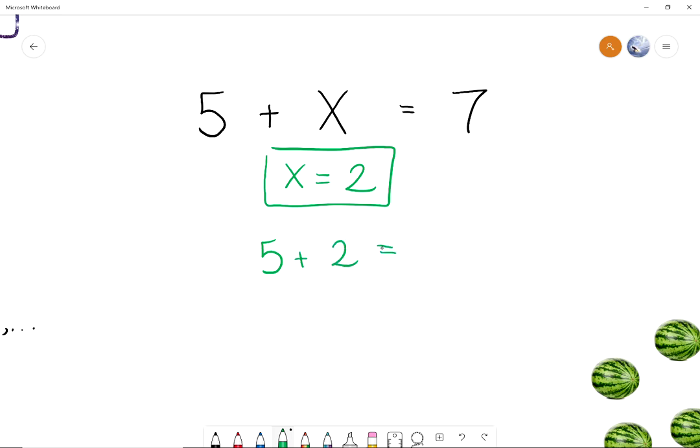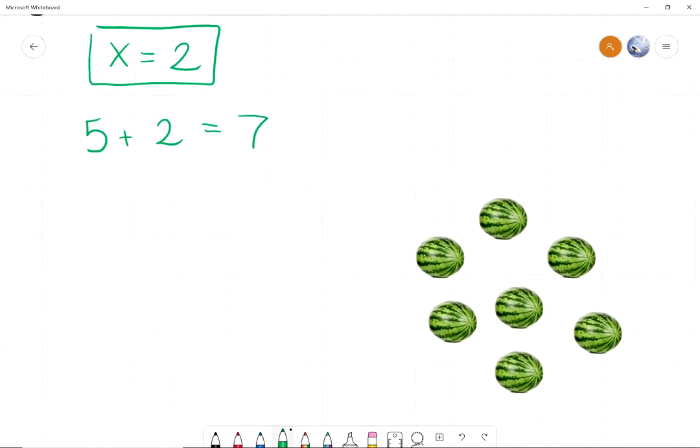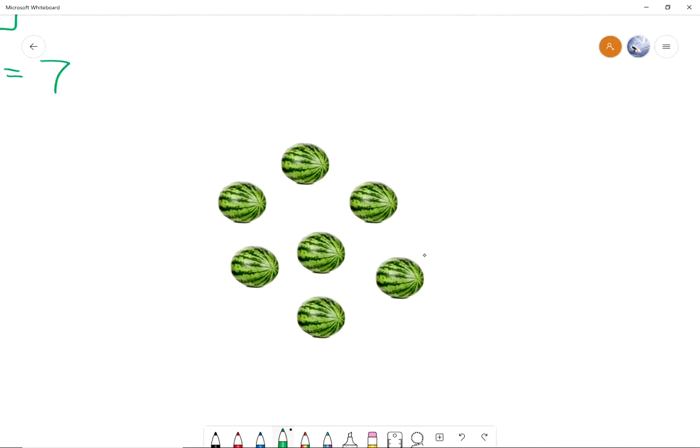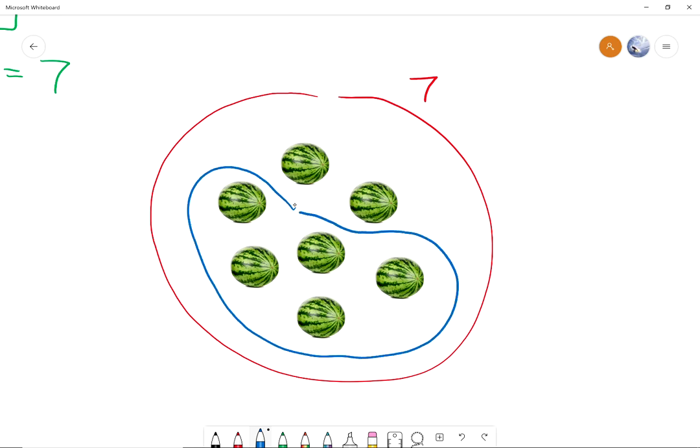But remember that numbers count things, and equations represent truths about numbers, and we can represent those. So we can think of groups of objects, of elements, and represent our equations according to those groups. So here is a group of 7 watermelons. So the total of the watermelons is 7. And if we want to find out what is the number that we need to add to 5 to get to 7, we can represent the group of 5, like this group. And then, so this has 5 elements, and then we need to find how many more watermelons we need to get to 7. And that would be this 2 watermelons.